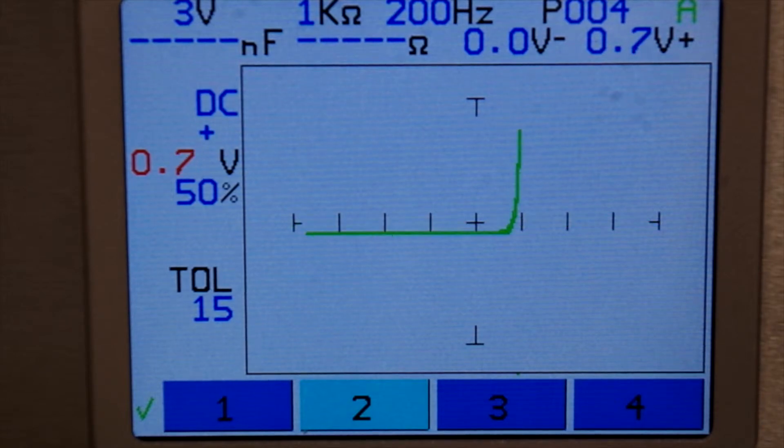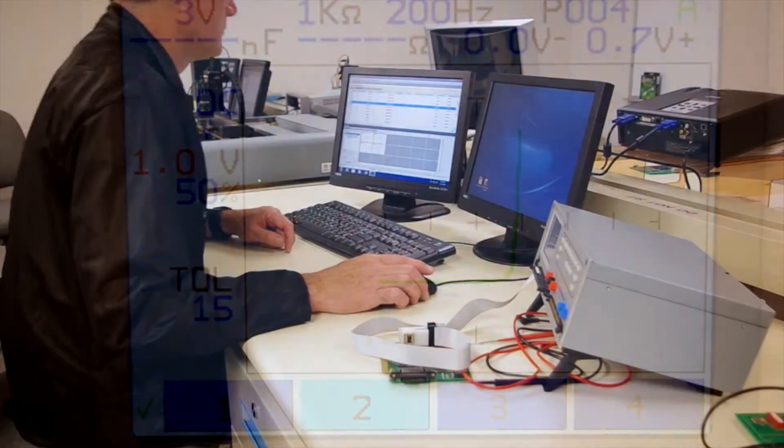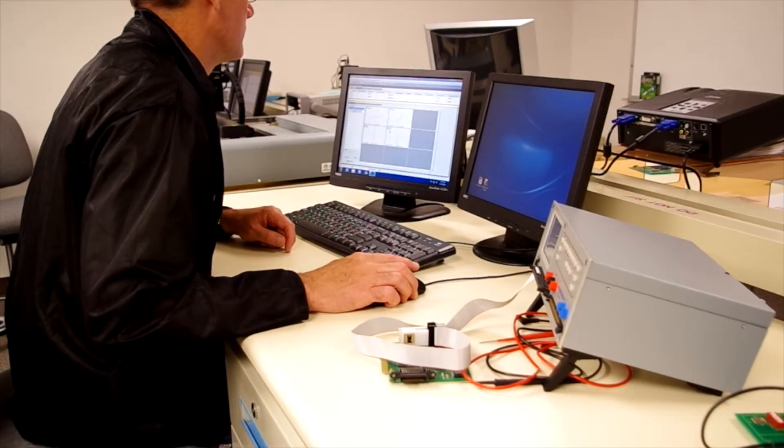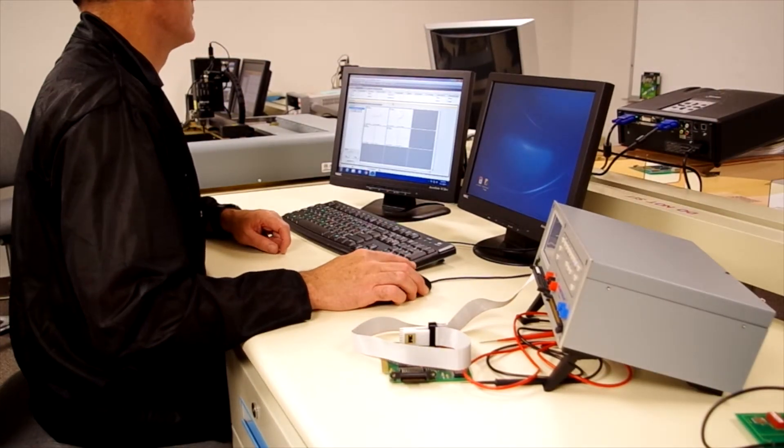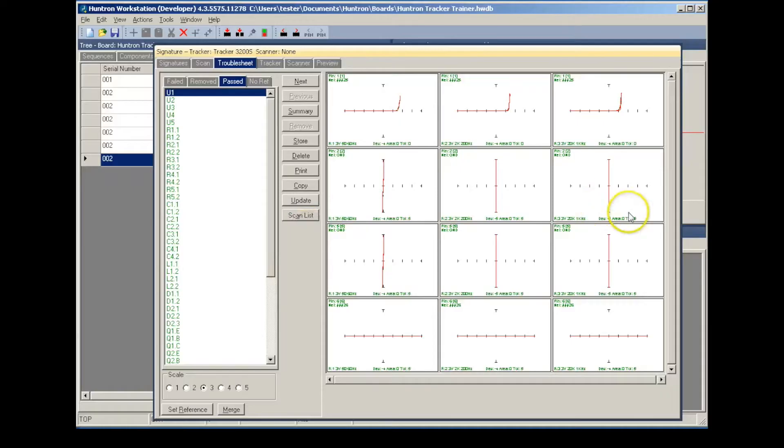The pulse generator can output DC or pulsed square wave voltages up to 10 volts. The tracker 3200S includes the Huntron workstation software, which adds the important ability to store signatures of good circuit boards on your PC.